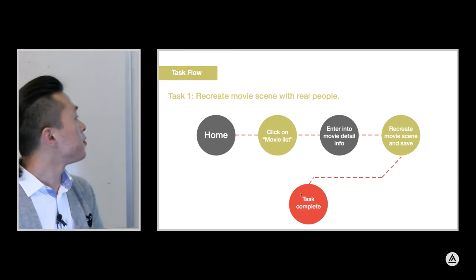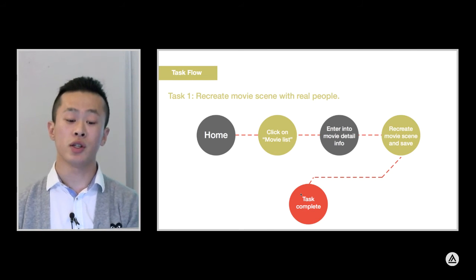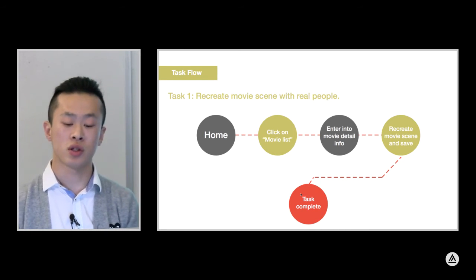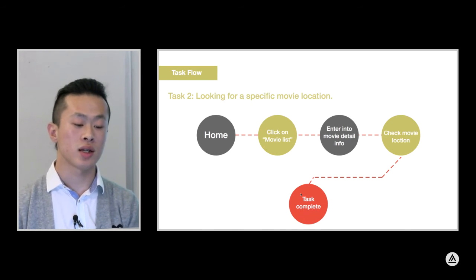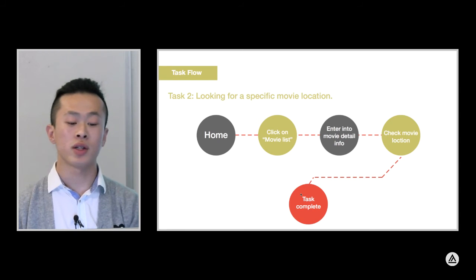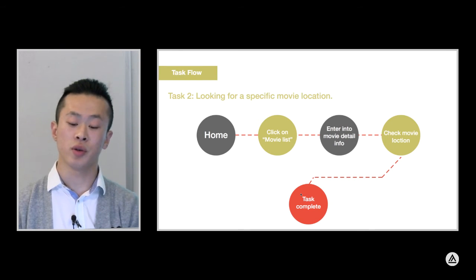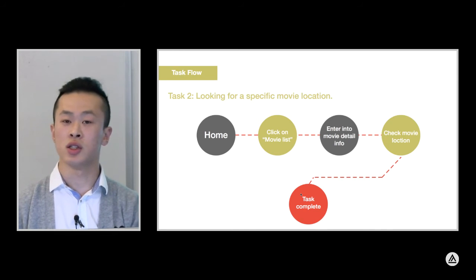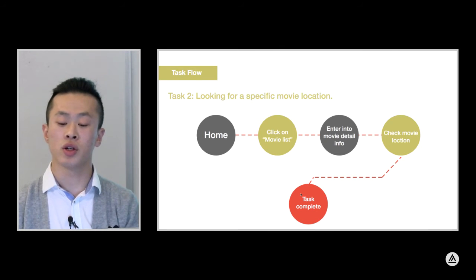This is the task flow — the first main task flow to recreate movie scenes with real people. As you can see, just simple steps and you can finish the task. This is the second task flow: looking for a specific movie location. It's basically the same — just click the movie list, enter the movie detail information page, check the movie location in the detail page, and you can even open the map through the movie location detail page.